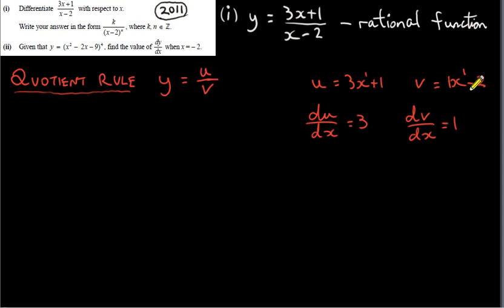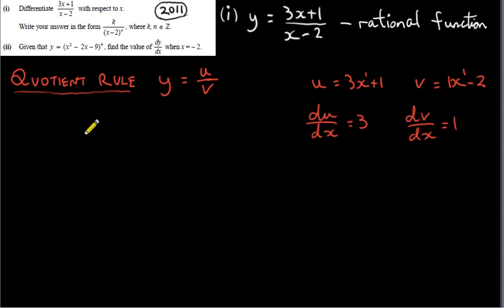Similarly, the derivative of minus 2 is 0. The next step is to take these four values and plug them into the quotient rule formula.